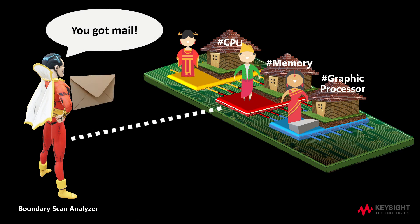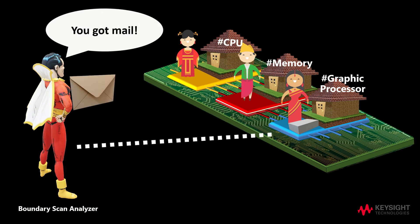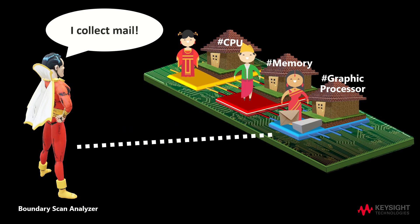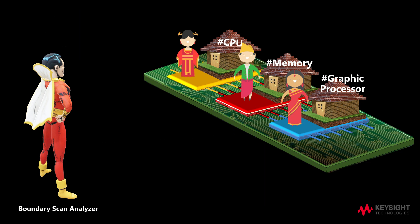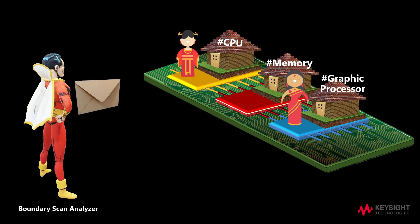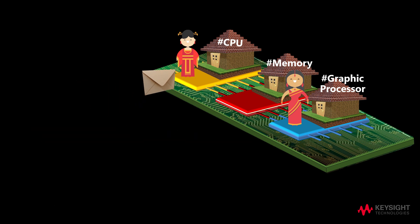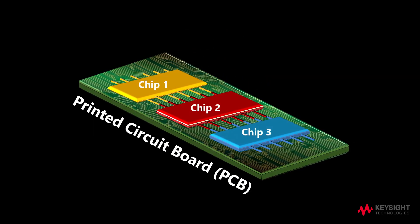Just like how a master and slave control system works, the master control unit — portrayed by the postman — will control the order execution by sending out mails to the respective chips in the whole system. It fetches and decodes program instructions, just like how the postman collects and sends out mails to the chips on the PCB. In the case when the postman does not see anyone at home, it will send the mail to the neighbour and request them to help pass the mail to the desired recipient. This showcases the interconnects between chips and illustrates how the chips on the printed circuit board act as a master-slave control system.